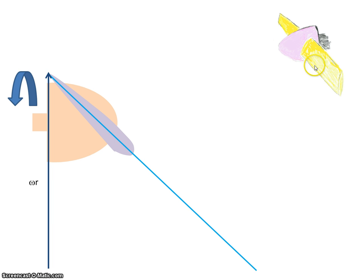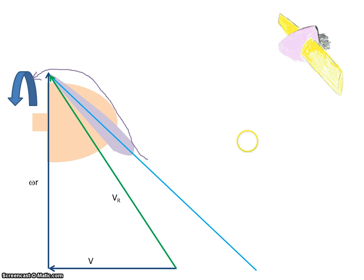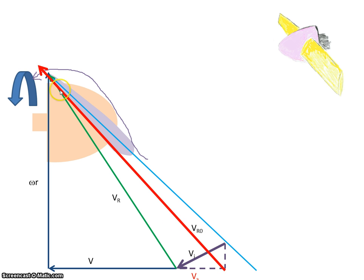If we have a propeller, we're going to take a small element of it. As it rotates, looking at the cross section, the rotational speed gives a velocity of omega·r. The aircraft will have a forward velocity v, and that will give us a resultant vr. As the air comes in over the propeller, there will be an induced velocity vi, and so the overall resultant velocity will be vr0.